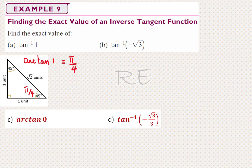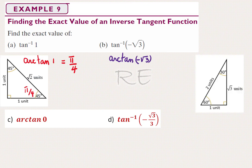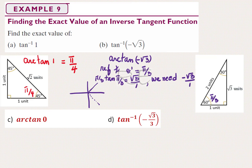Part B calls for the arc whose tangent is negative √3. Our reference triangle will be the 1-2-√3 triangle, and the arc whose tangent is √3 will be π/3.